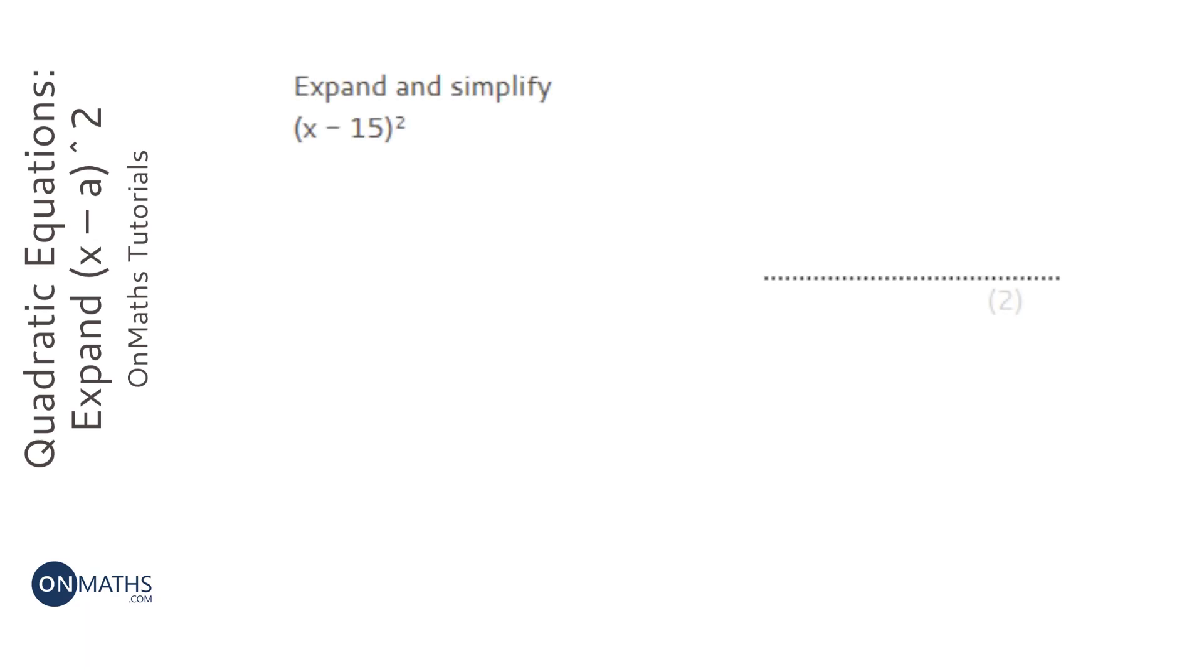Okay, so the first thing to do with this question is to write it out twice. Whenever you square something you times it by itself, and itself is the bracket x minus 15.